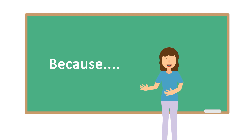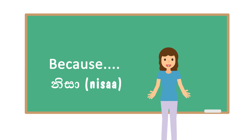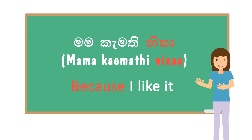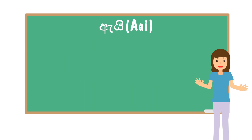So the word for 'because' is NISA. But you have to use this word at the end of a sentence. As an example: 'mama kamati NISA' means 'because I like it.' Now let's take some questions with EI and see how to give the answer.